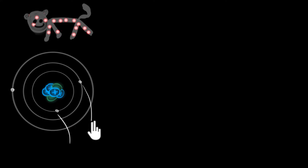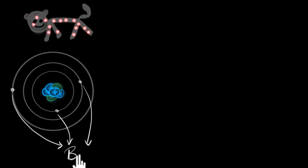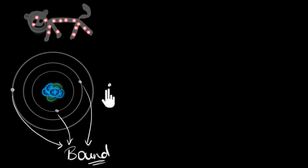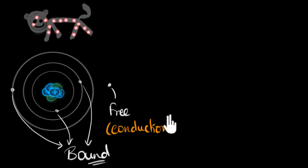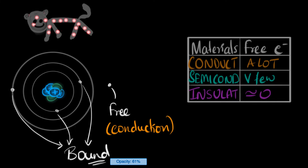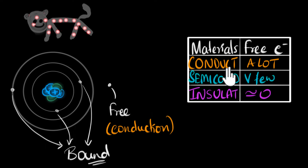Some electrons are tightly bound to the nucleus — we call them bound electrons — and these are not responsible for conduction. Whereas other electrons are not strongly attracted by the nucleus, and they are free to move from one atom to another. It's these electrons, which we call conduction electrons or free electrons, that are responsible for conduction. In some materials it's very easy to get these free electrons, and so they end up having a lot of them — we call these materials good conductors.